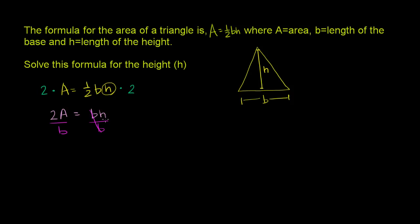So we get h, and I'm just swapping the sides here, h is equal to 2A over b. 2A over b. And we're done. We have solved this formula for the height. And I guess this could be useful if someone just gave you a bunch of areas and a bunch of base lengths, and they said, keep giving me the height for those values, or for those triangles.